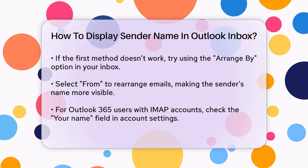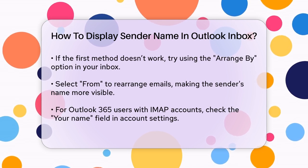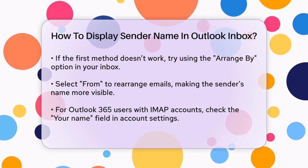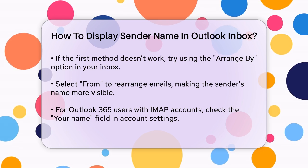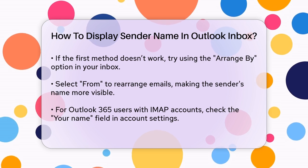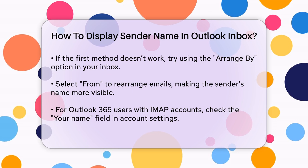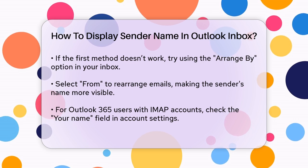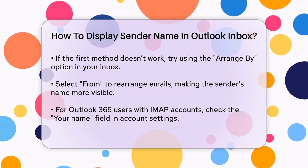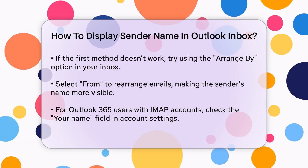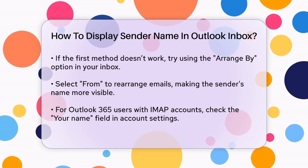For those using Outlook 365 with IMAP accounts, there's an additional step you might need to take. Sometimes the issue is with how the account is set up. Double-click on your account in the Account Settings and ensure that the Your Name field is correctly filled in. This should reflect the name you want to see in the From field when you send or receive emails.